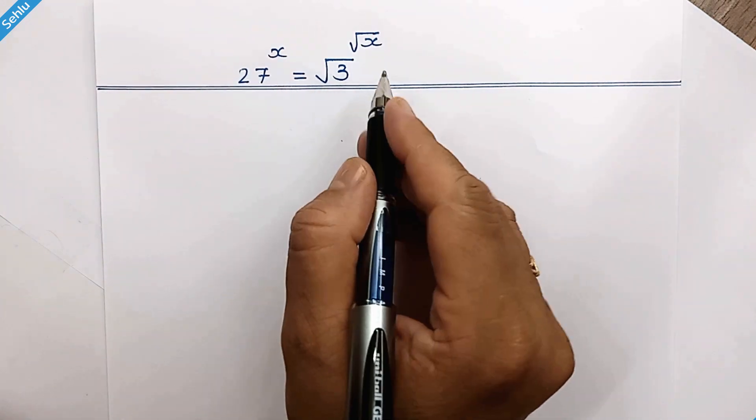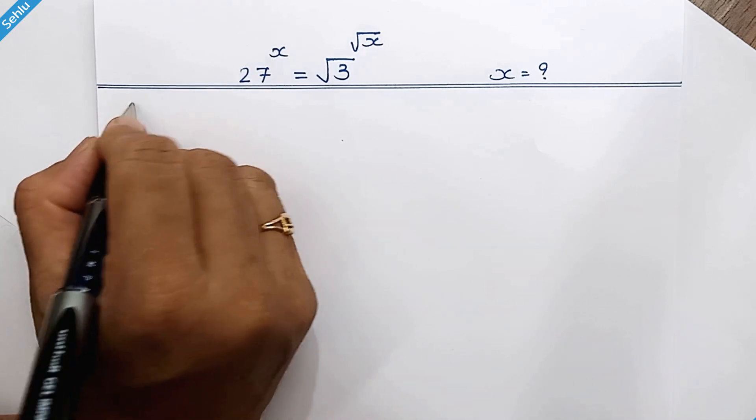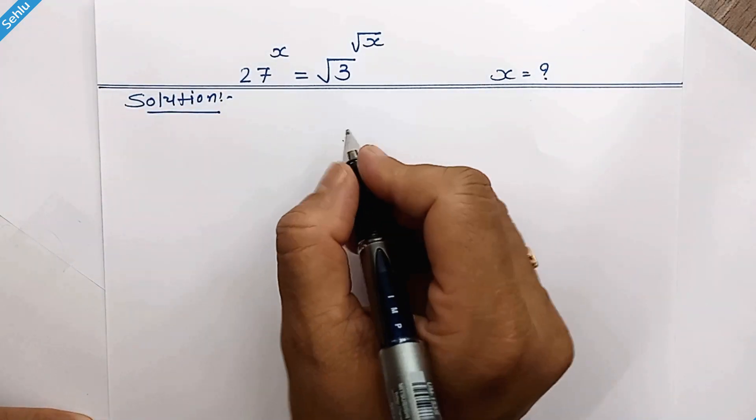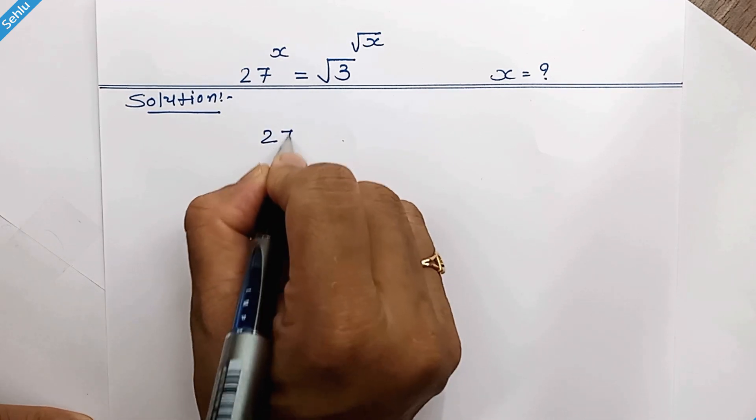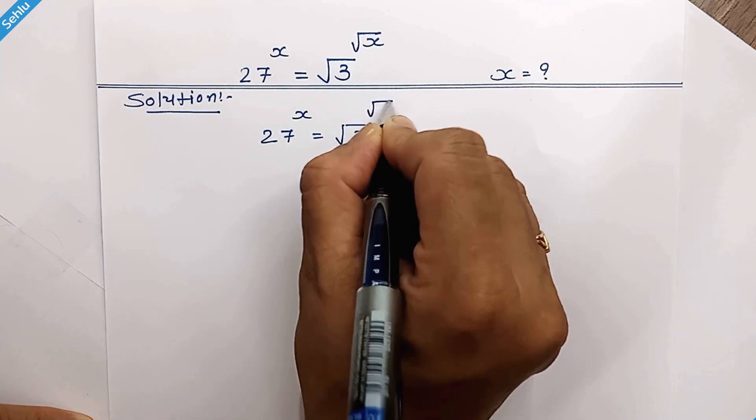Hello friends, this is our question and we need to find the x. Let's start. Let's write the question. 27 to the power x is equal to square root of 3 to the power square root of x.